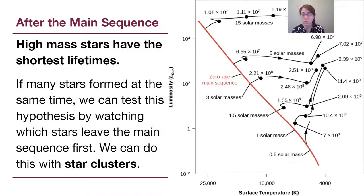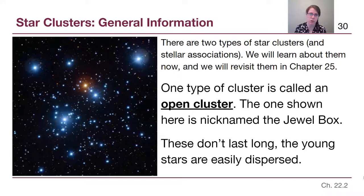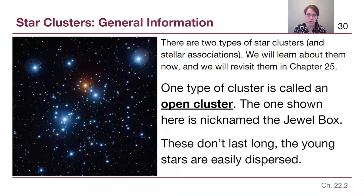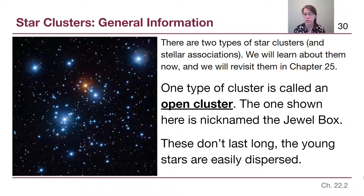In order to use star clusters we need to understand them, specifically the two main types astronomers have identified — there are also stellar associations, but we will focus on two types. One of these types is called an open cluster; the one shown here is nicknamed the Jewel Box. Open clusters don't last very long. When we see them, those stars have very recently formed together in the same stellar nursery, but those young stars are easily dispersed — there aren't enough of them for gravity to hold them together. So an open cluster is by definition young in age because those stars tend to move away over time.